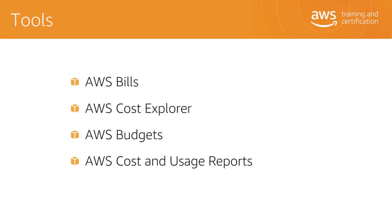From the Billing Dashboard, you can access a number of other cost management tools that you can use to estimate and plan your AWS costs, receive alerts if your costs exceed a threshold that you set, and if you work with multiple AWS accounts, simplify your accounting. Let's take a closer look at each one of these tools.